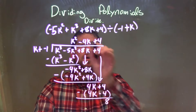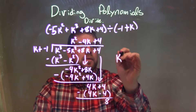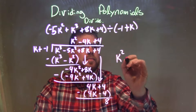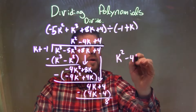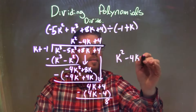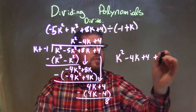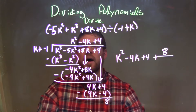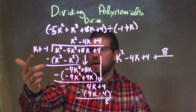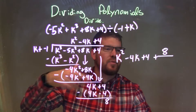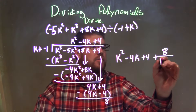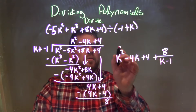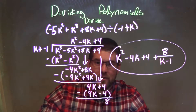So I'm pretty much done. I'm going to write what's up here: k squared minus 4k plus 4, plus my remainder 8 over my divisor. I'll rewrite the divisor as k minus 1 — it does look nicer for a final answer. And that is the final answer.